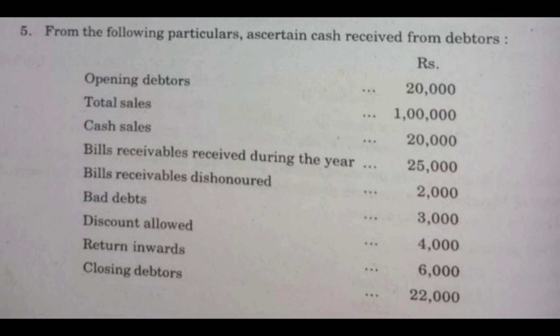Bad debts: Rs. 3,000. Discount allowed: Rs. 4,000. Returns inward: Rs. 6,000. Closing debtors: Rs. 22,000. Based on these details, let us prepare a debtors account to find out cash received from debtors.